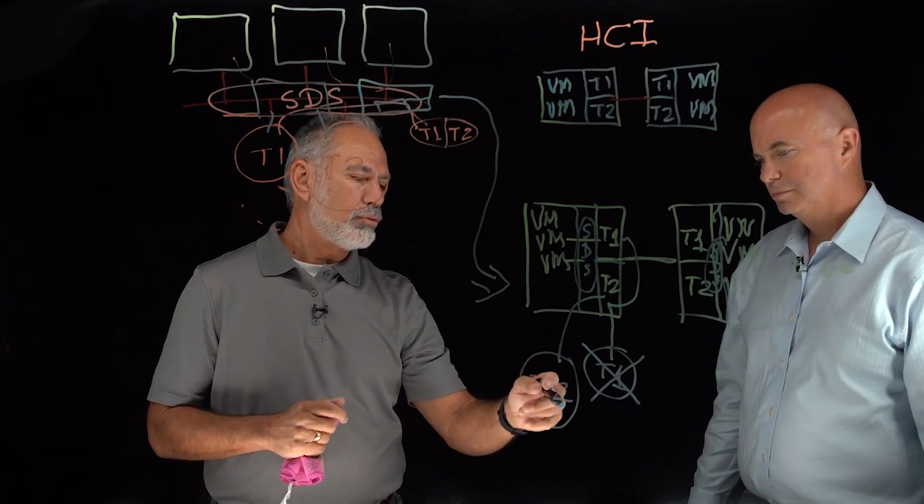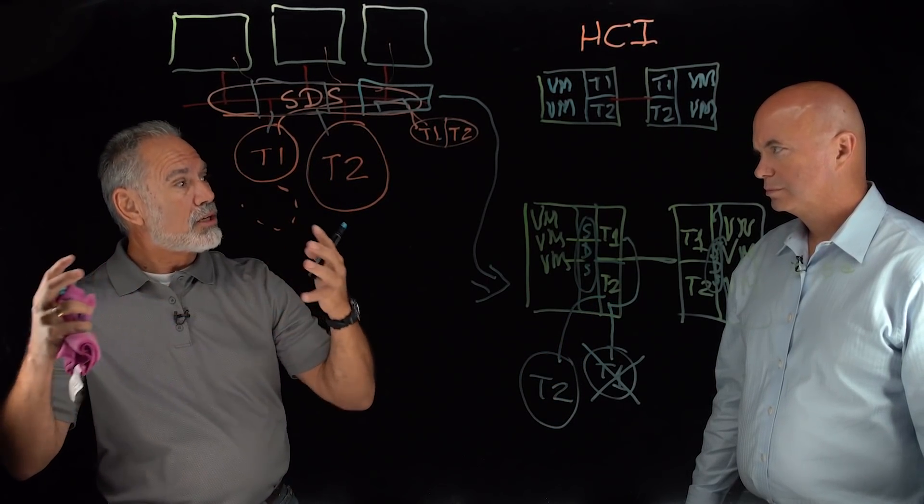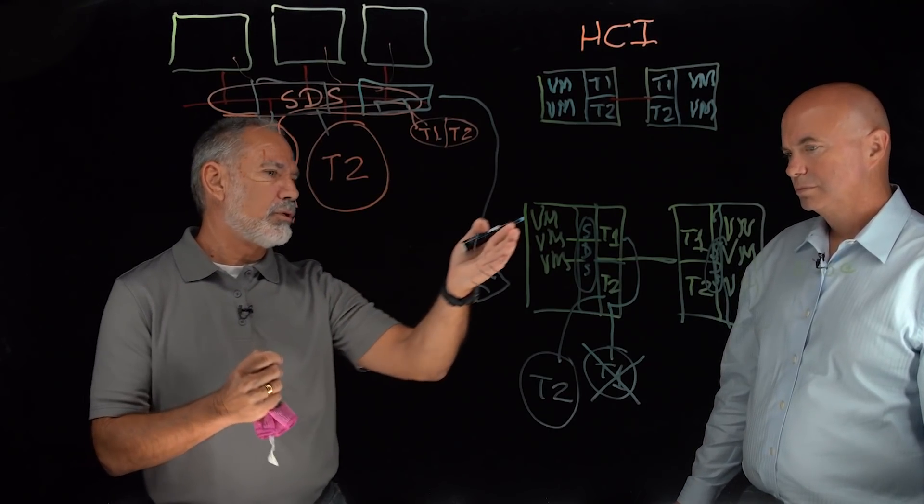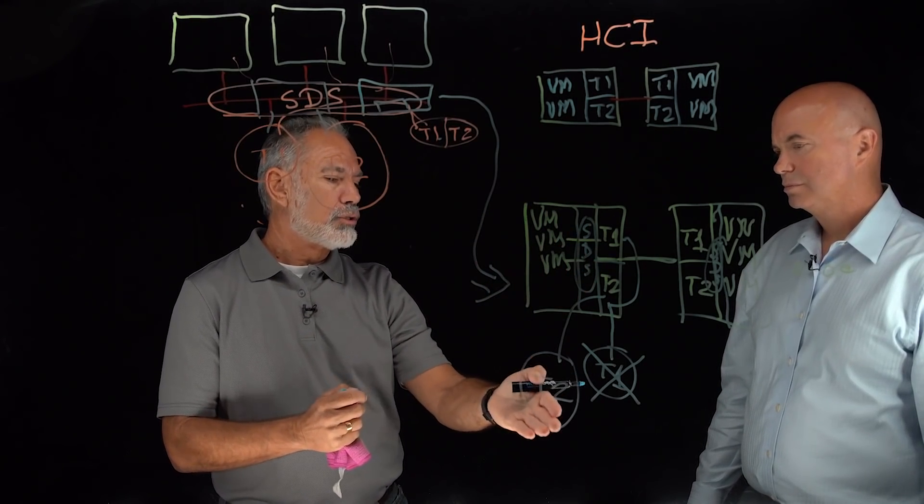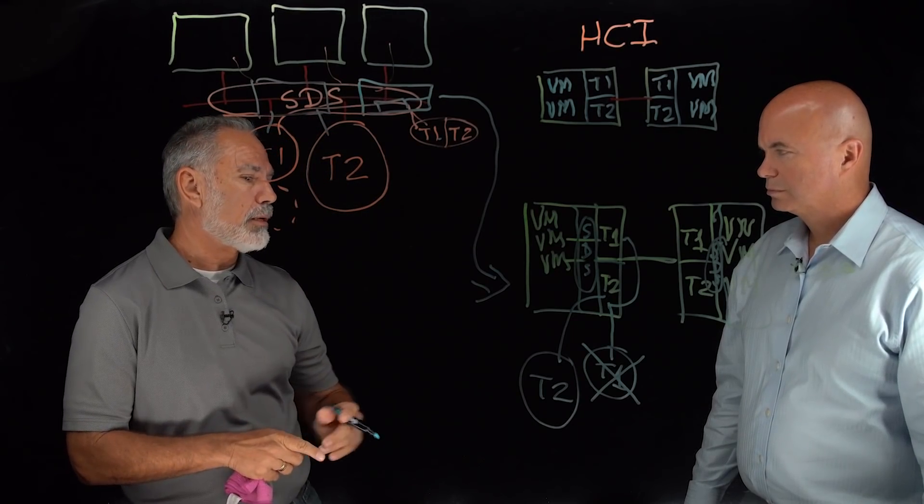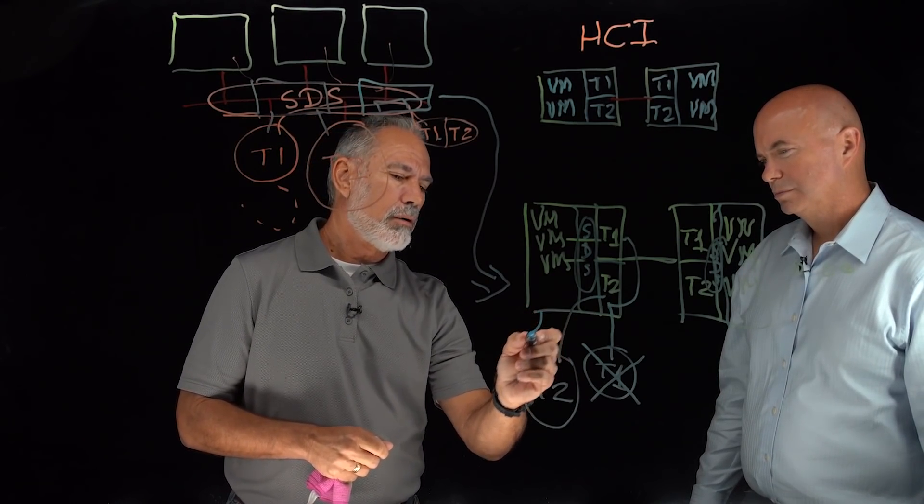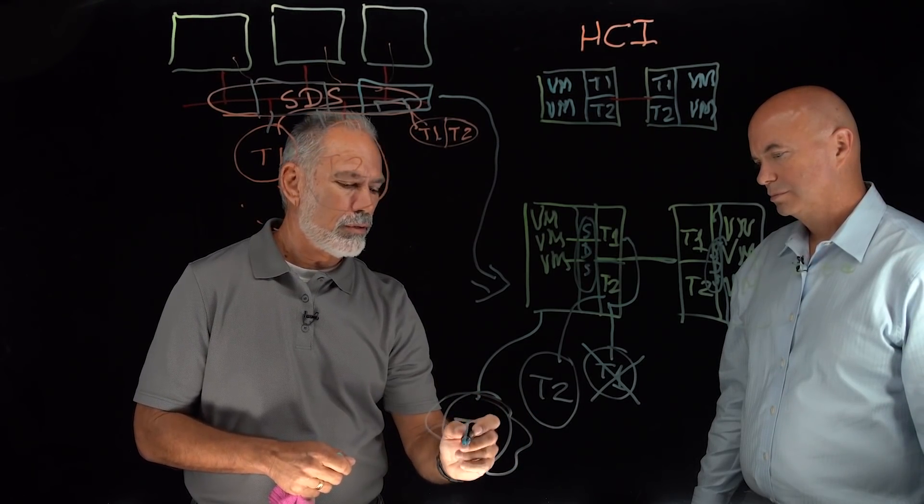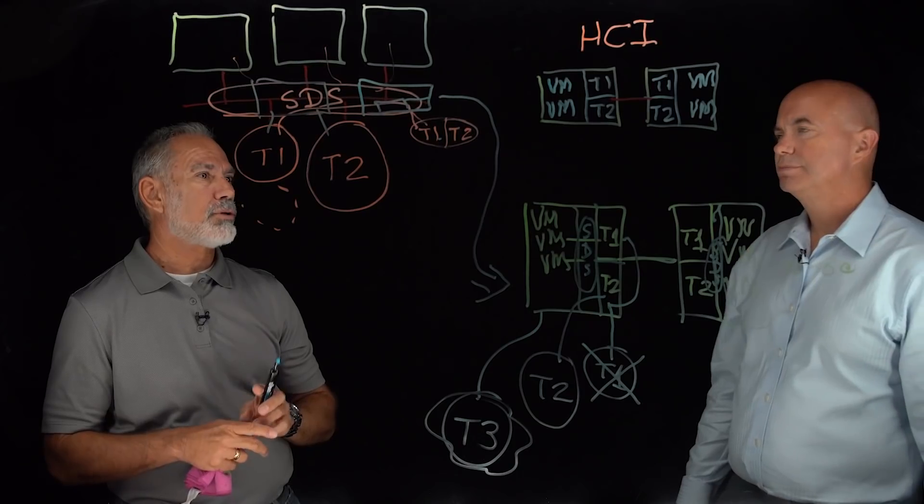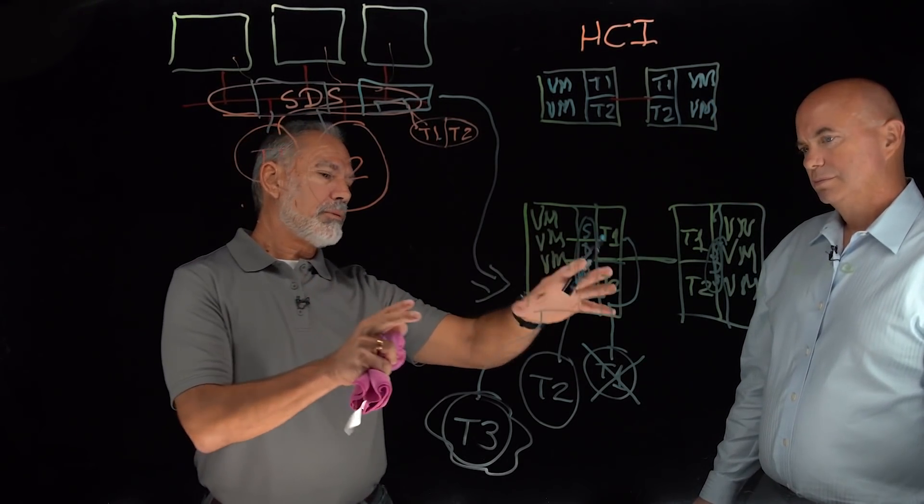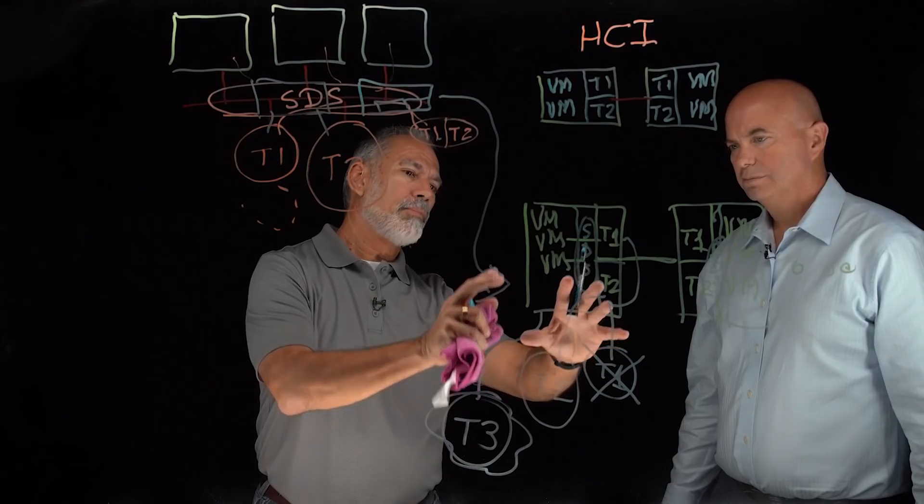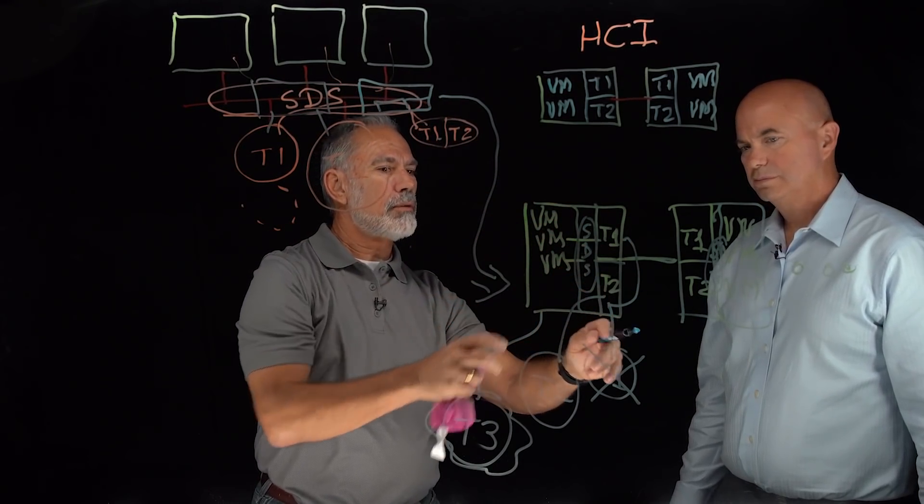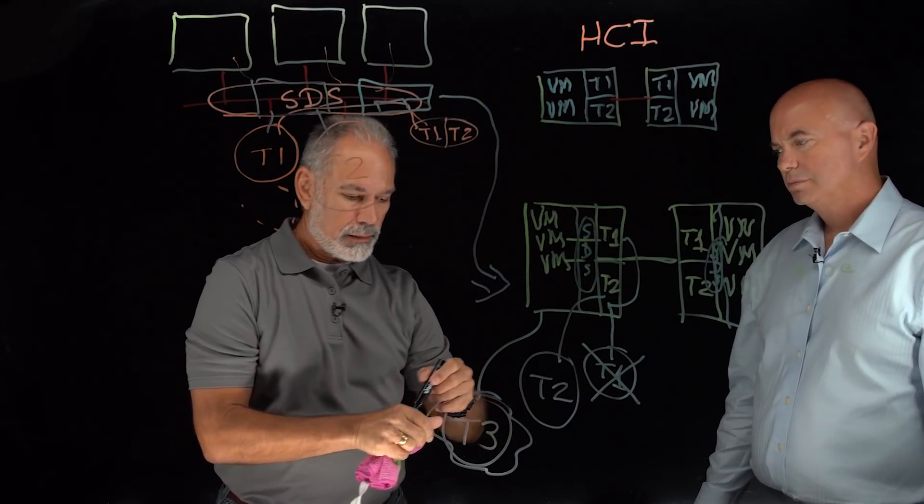And the T2, the tier two storage, would likely be something that continues to grow outside the boundaries of the physical chassis here. So we would continue to use external arrays possibly there. And to the point where you can look at things like cloud-based storage for your archives and long-term storage here.